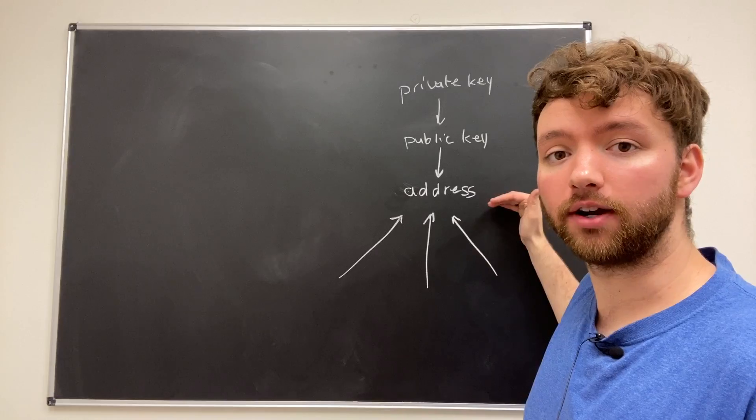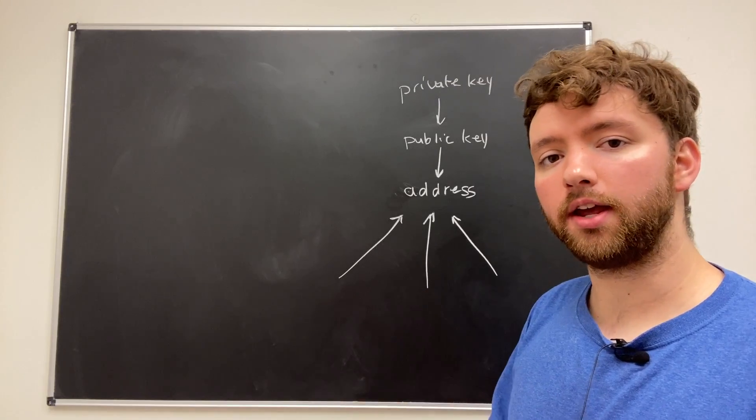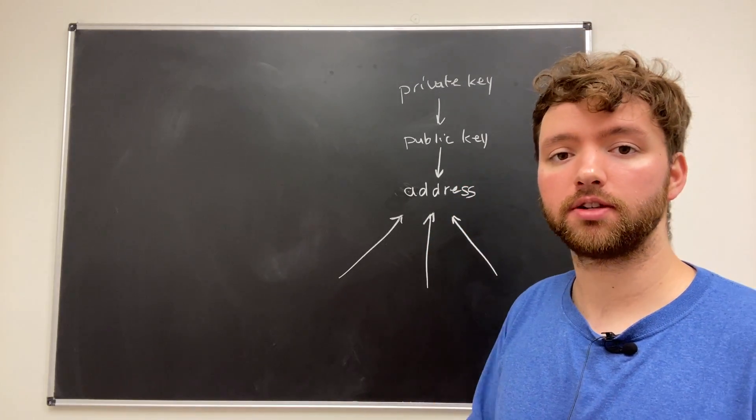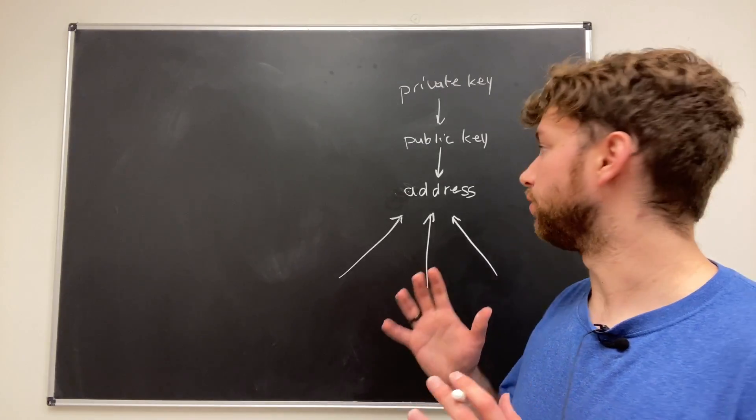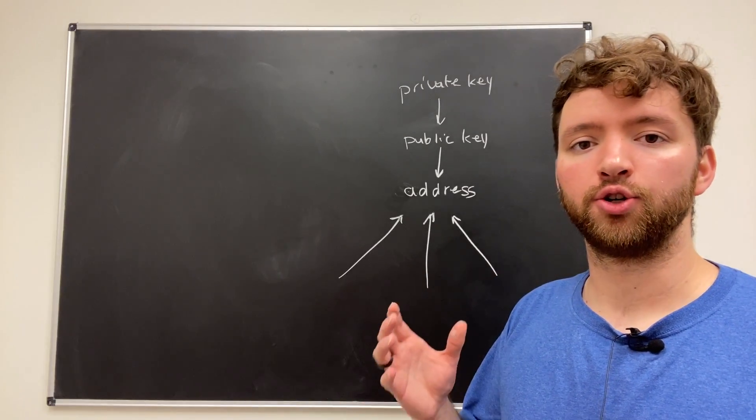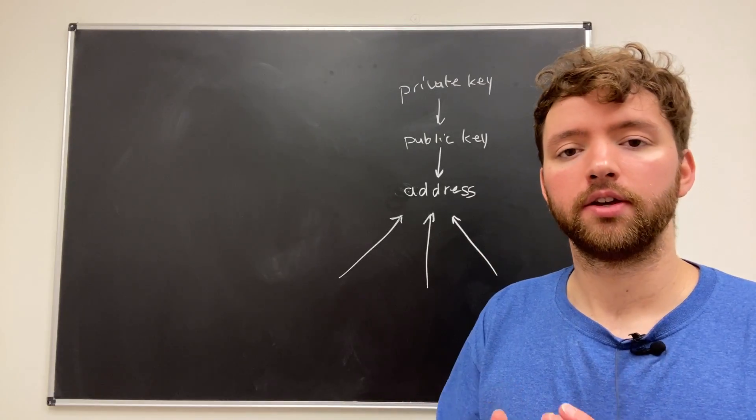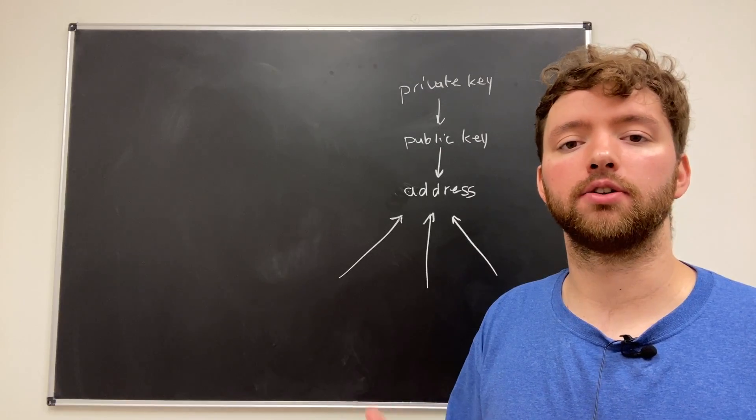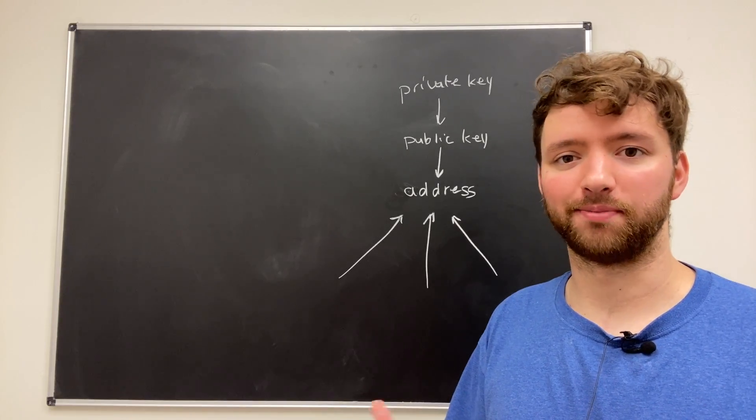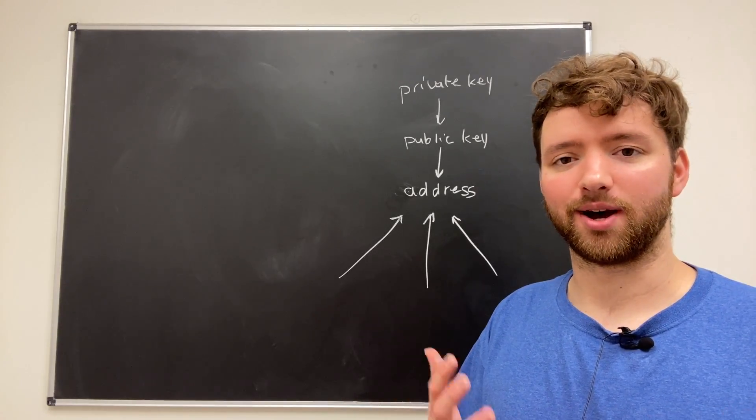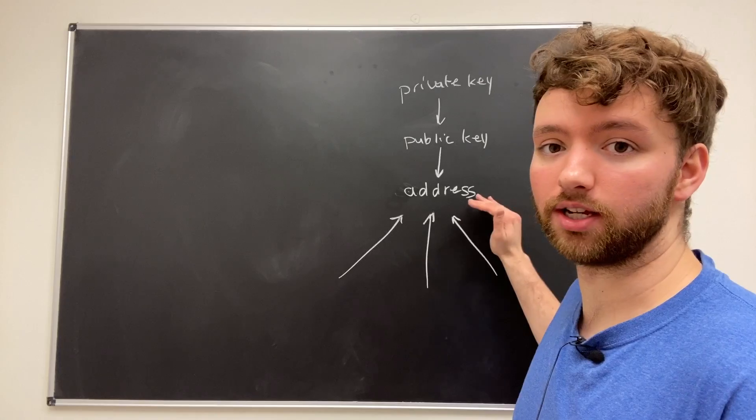And the private key and the address have a one to one connection. There's one private key for one address. So there is security and privacy concerns of address reuse, which you can research all day if you're interested. But there are a few main things. First, if you're reusing an address, it's a lot easier to associate that address with you or a particular entity that you're working with. So it makes funds easier to track and can ultimately lead to privacy concerns down the road.